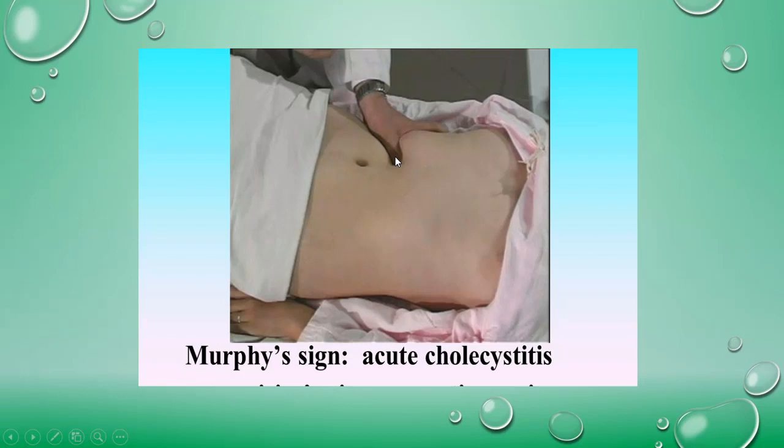To elicit Murphy's sign, ask the patient to breathe in deeply and palpate the gallbladder in the normal way. At the height of inspiration, the breath will be arrested with a gasp as the inflamed mass is felt — this is Murphy's sign. With the help of this sign, you can diagnose acute cholecystitis, which is inflammation of the gallbladder.